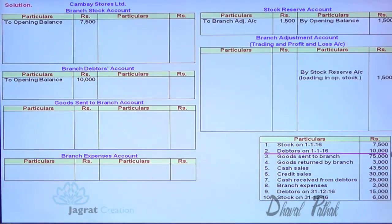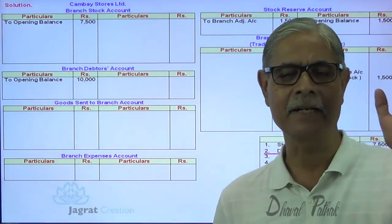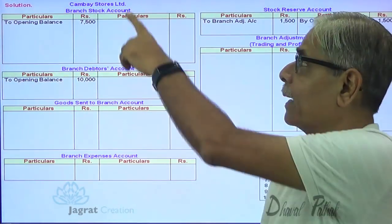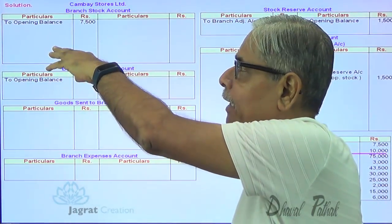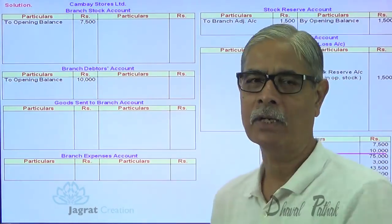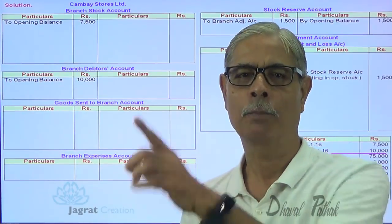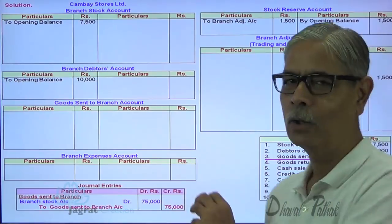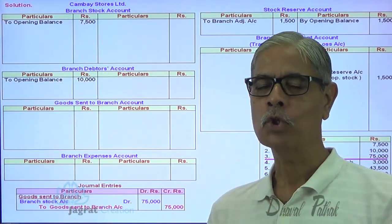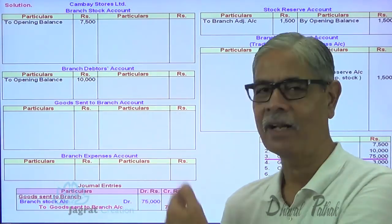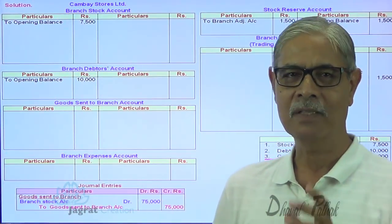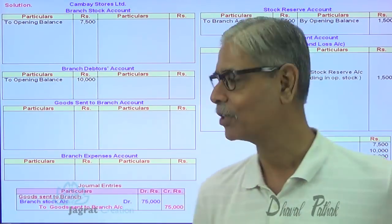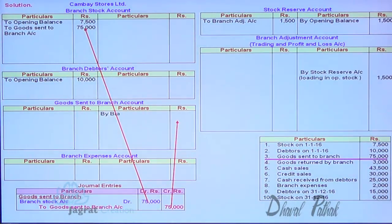Goods sent to branch — 75,000 — this is also at invoice price. Under the debtors system, the entry is: branch account debit to goods sent to branch account credit. Under the stock and debtors system, when goods are sent to the branch the branch stock level increases, so the entry is: branch stock account debit to goods sent to branch account credit. This 75,000 invoice price has a profit element of 15,000, which should appear on the credit side of the branch adjustment account. The adjustment of 15,000 will be recorded in the branch adjustment account.